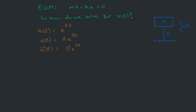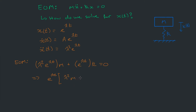We take these derivatives of x and substitute them back into the equation of motion. When we substitute back in, the equation becomes: λ²e^(λt) times m, and since there's no first-derivative term we skip that, then plus e^(λt) times k, equals zero. We simplify by bringing e^(λt) out to the front, giving us e^(λt) times (λ²m + k) = 0.